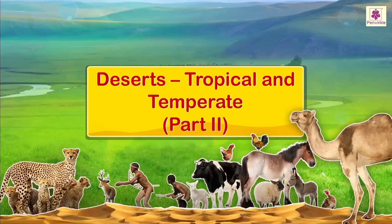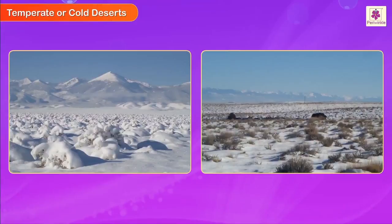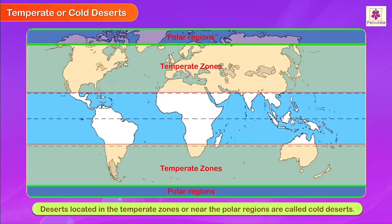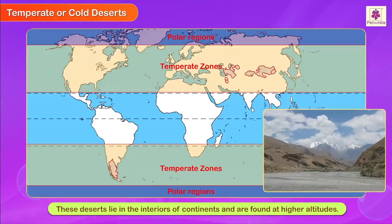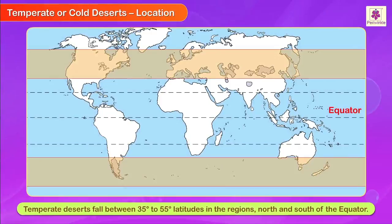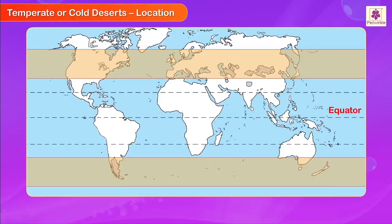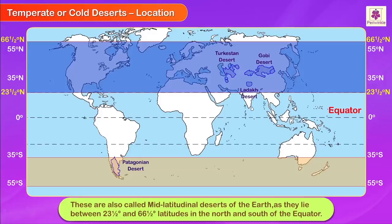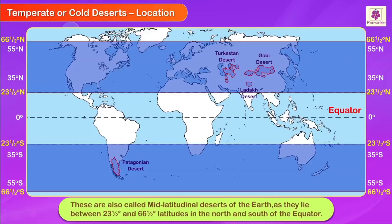Temperate or cold deserts: Deserts located in the temperate zones or near the polar regions are called temperate or cold deserts. These deserts lie in the interiors of continents and are found at higher altitudes. Temperate deserts fall between 35 degrees to 55 degrees latitudes in the regions north and south of the equator. They are also called mid-latitudinal deserts, as they lie between 23.5 degrees and 66.5 degrees latitudes north and south of the equator.